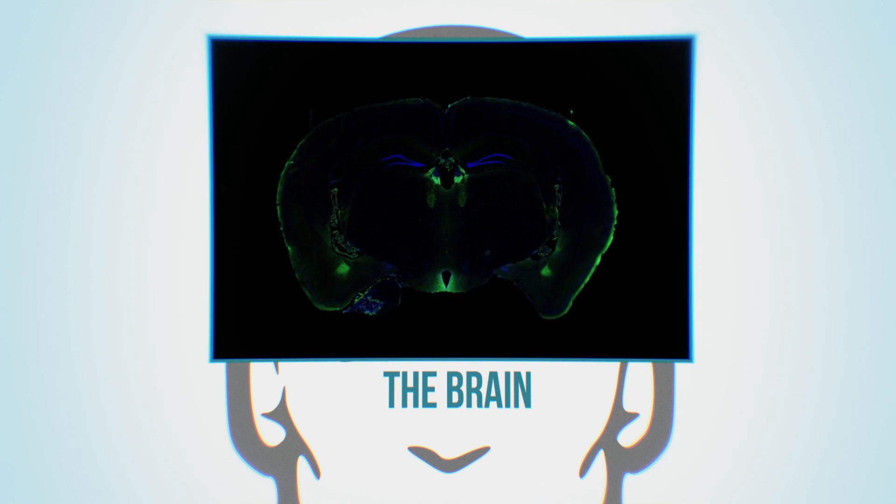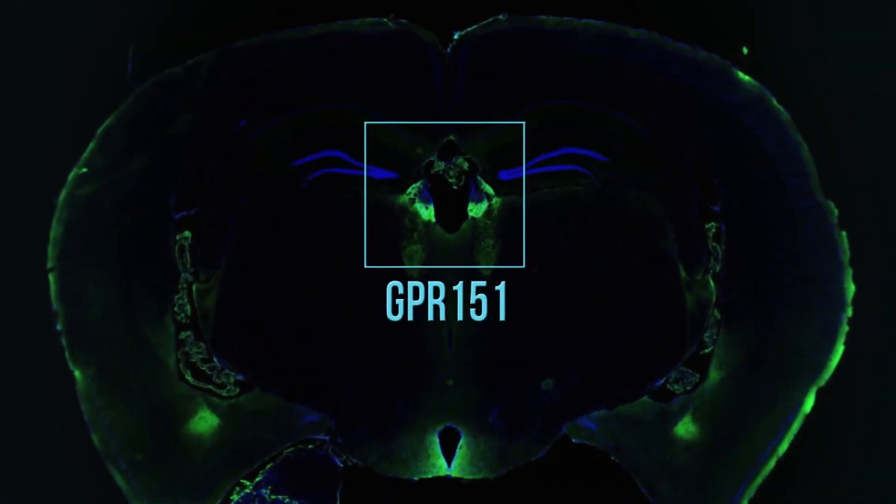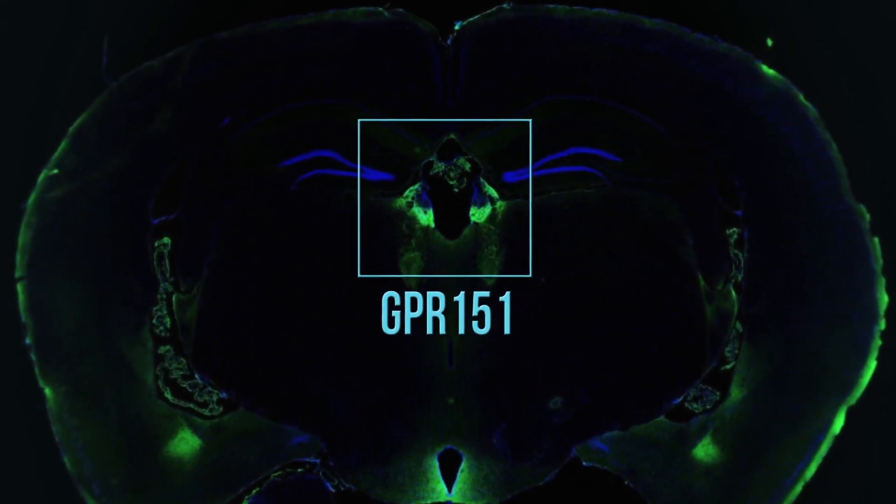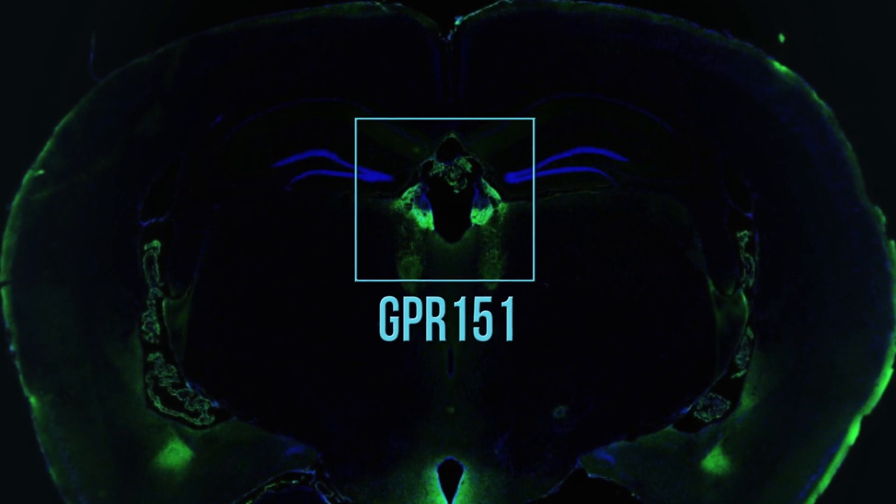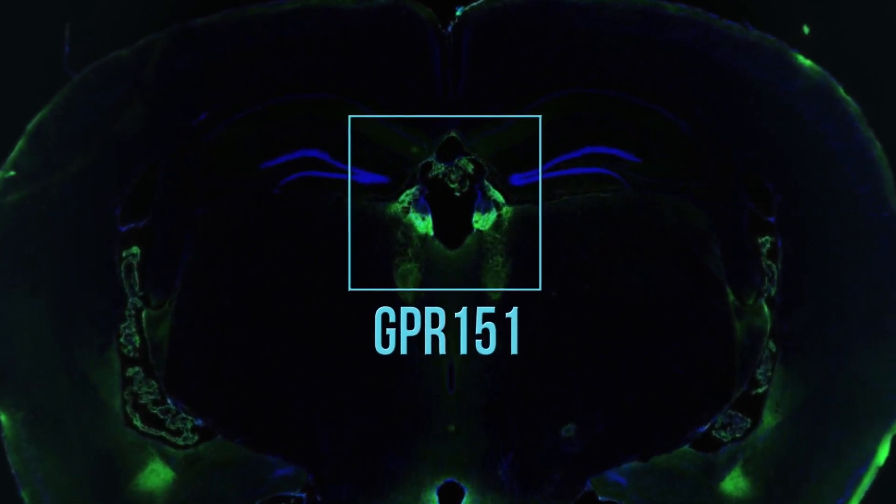Researchers are finding so-called orphan receptors, proteins we know little about, like GPR151, expressed in the thalamus. This receptor is somehow involved when we are depressed, feel anxiety, or fall into addiction.